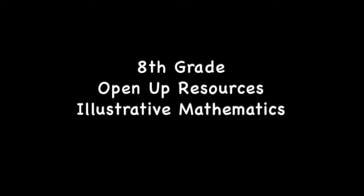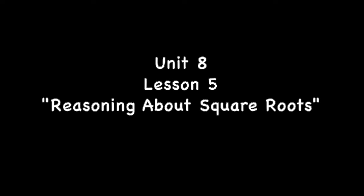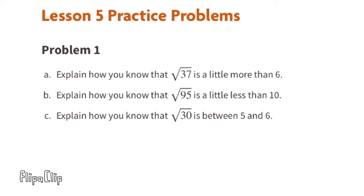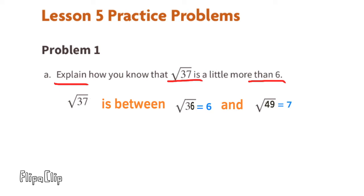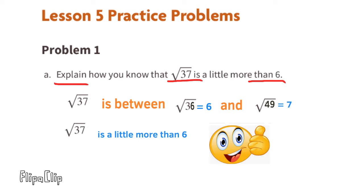8th grade Open Up Resources Illustrative Mathematics, Unit 8 Lesson 5: Reasoning About Square Roots. Problem 1a: Explain how you know that the square root of 37 is a little more than 6. Because 6 times 6 is 36 and 7 times 7 is 49, you know that the square root of 37 is going to be between the square root of 36 and the square root of 49. Since 37 is much closer to 36 than it is to 49, you know that the square root of 37 is going to be just a little bit more than 6.